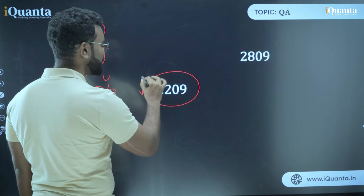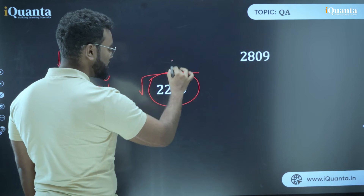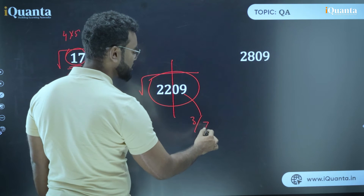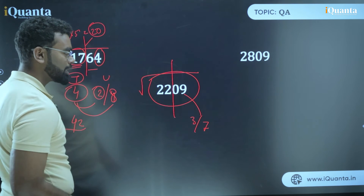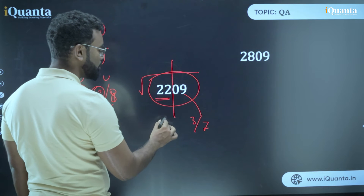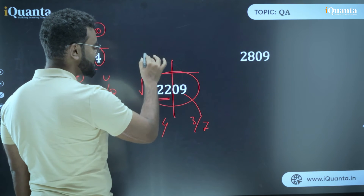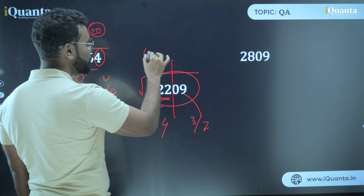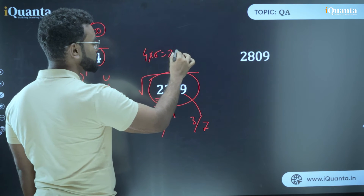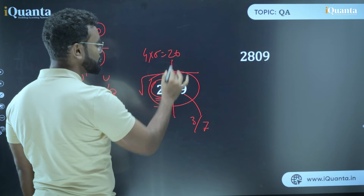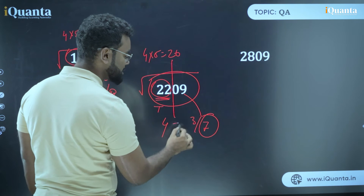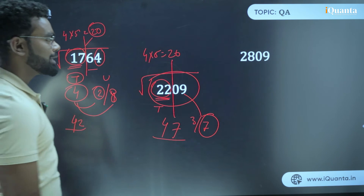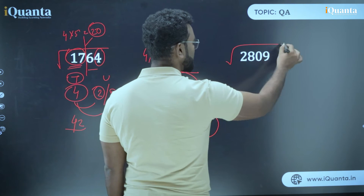Next example: √2209. Remove the last two digits. For unit digit 9, there are two possibilities: 3 and 7, since 3 squared is 9 and 7 squared is 49. For the remaining digits 22, the highest perfect square less than or equal to 22 is 16, so the tens digit is 4. Now 4 × 5 = 20, and 22 is more than 20, so take the bigger unit digit. The answer is 47.